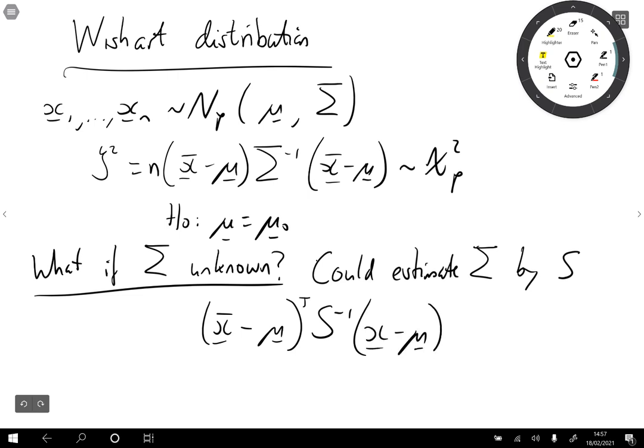And I forgot my transposes. In order to do the hypothesis test with this, we'd need to know, let's call this zeta squared again. We'd need to know what is the distribution of zeta squared under H0.